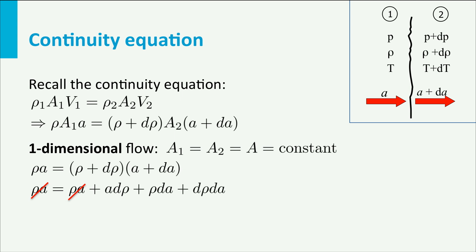Now, differentials are infinitesimally small, so the product of two differentials, such as d rho dA, is so small that it can be neglected. So, the application of the continuity equation gives us the expression A is minus rho dA over d rho.